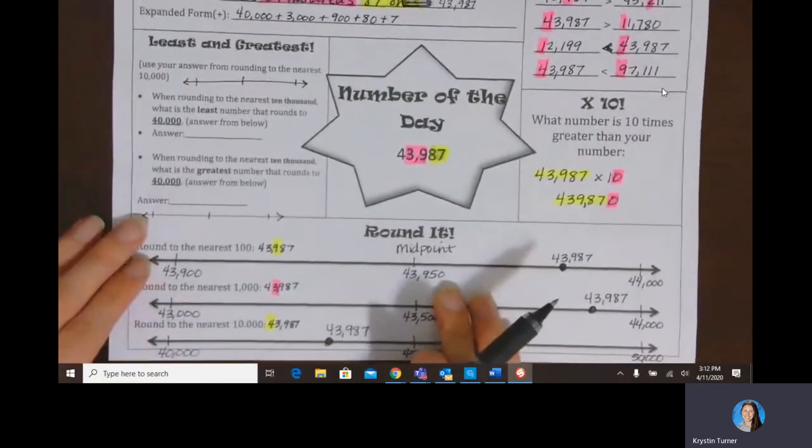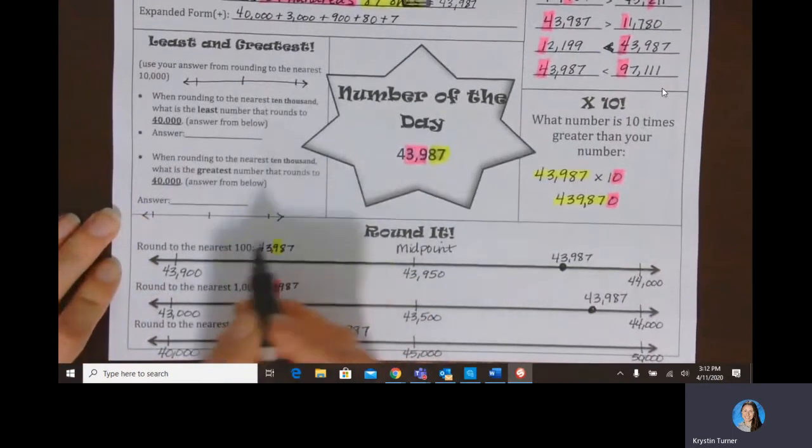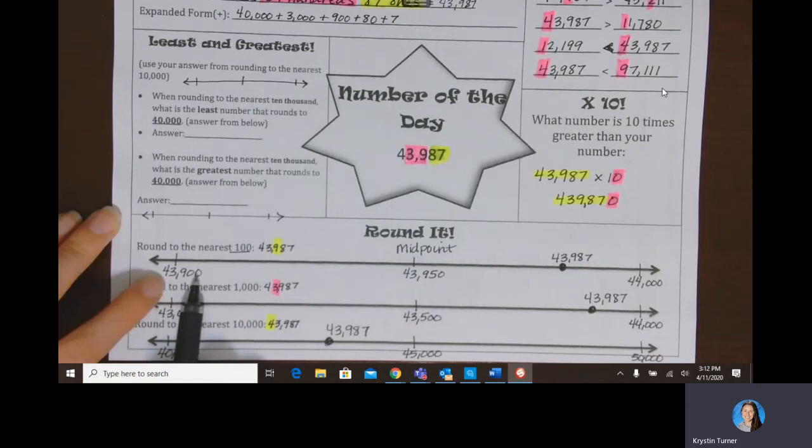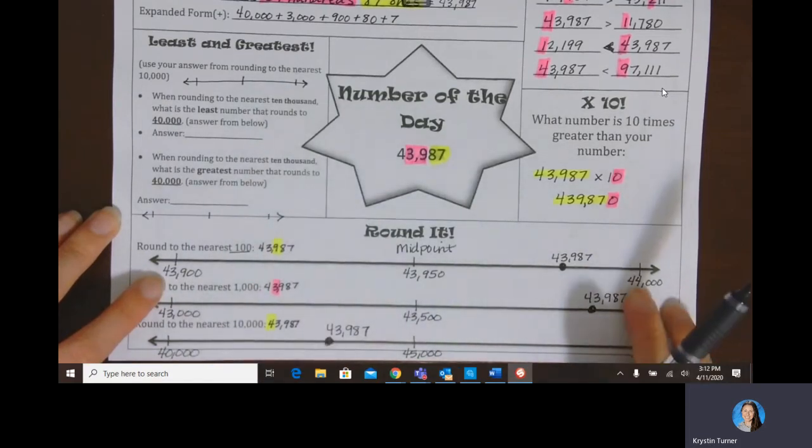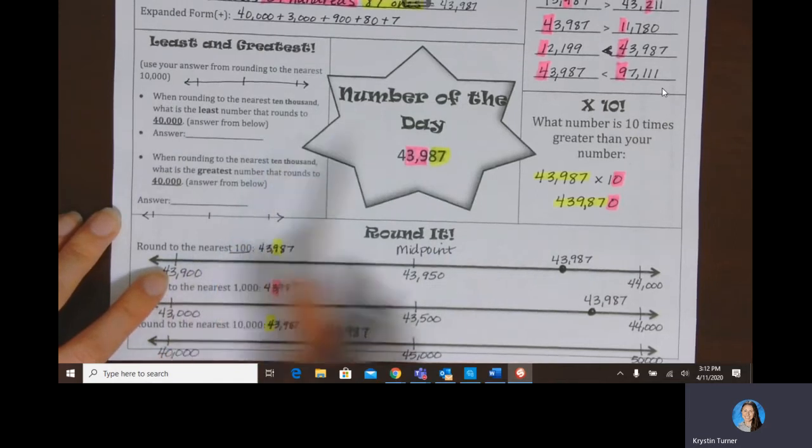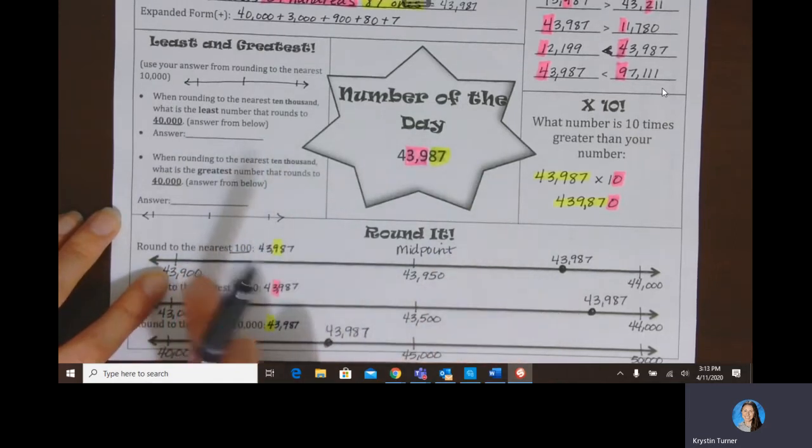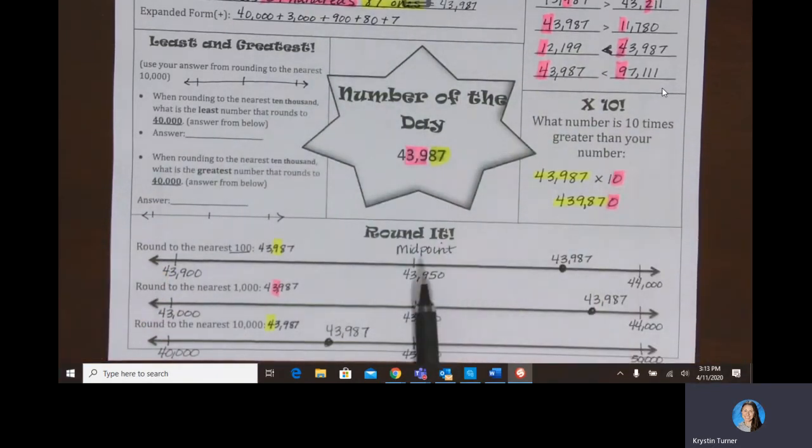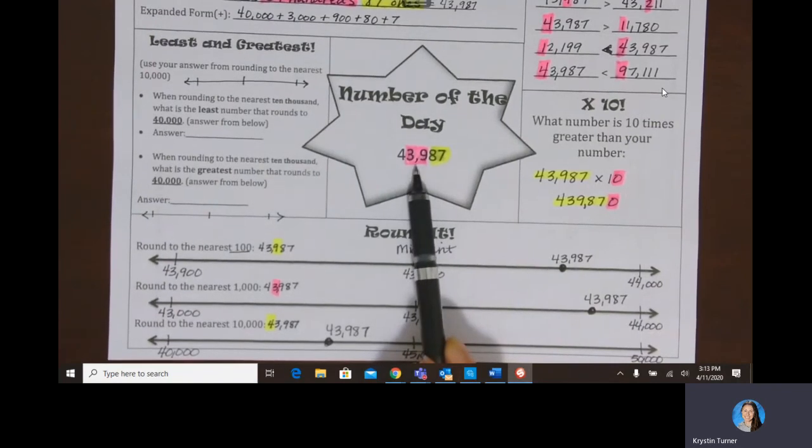Now moving on to the rounding portion. We have to be paying attention to what we're rounding to. So if we're rounding to the hundreds, that's this 900. So I think 43,900 plus one more 100 would be 44,000. What's in the middle of 43,900 and 44,000? That would be 43,950, right? Thinking about half of 100 would be 50. So we add 50 to this number that gets us our midpoint, because we only added 100 to it.